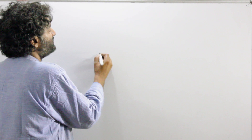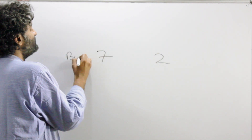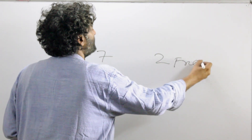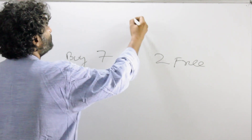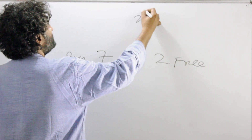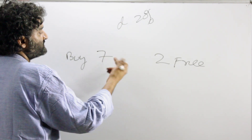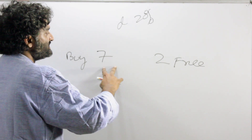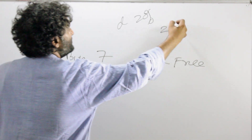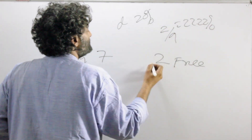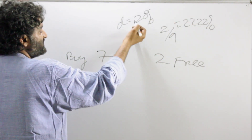Let's say the scheme is buy seven, get two free. In another place, there is a discount of 20% being offered. Which deal should you go for? You can only go for one. Straight away, if you've learned from the previous example, your answer is going to be two by nine, and two by nine is 22.22%. So this deal is equal to 22.22%, while the other deal had only a discount of 20%.